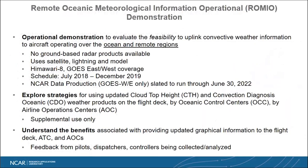Having given a brief overview of the products used in Romeo, here's an overview of the Romeo Remote Oceanic Meteorological Information Operational demonstration. The demonstration was really to evaluate the feasibility of uplink of information to aircraft — and we certainly validated that idea. Over oceanic regions, ground-based radar products are not available. We used Himawari 8 for the Southeast Asia/Australia region and GOES East and West for the Americas. It was scheduled from July 2018 through end of 2019. NCAR has been producing the GOES East and West products on a prototype server, but that's only slated to run through June of this year.